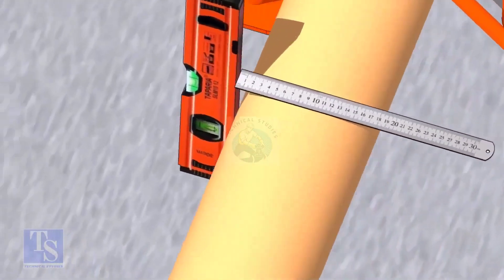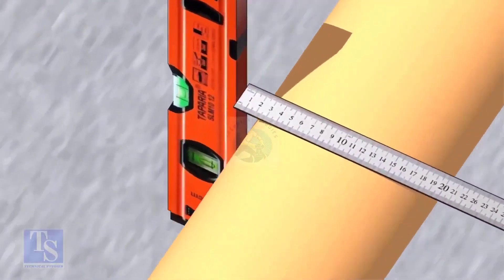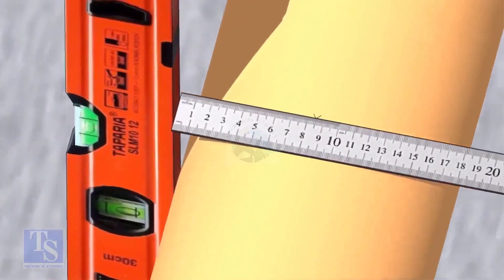Mark the center of the pipe. OD of a 6 inch pipe is 168mm, so mark the half OD 84mm as shown.